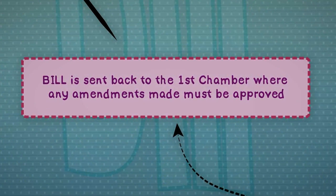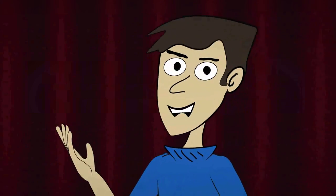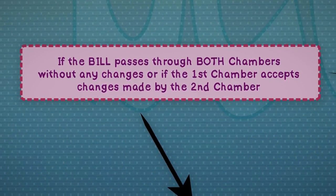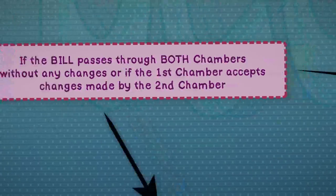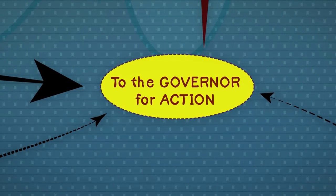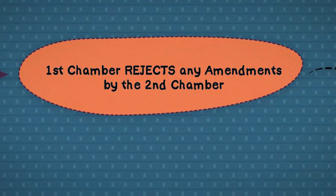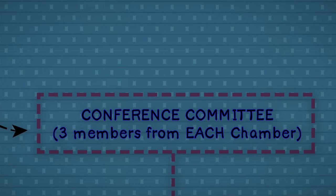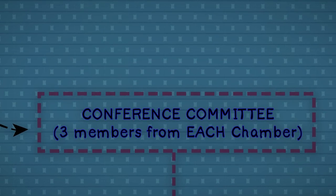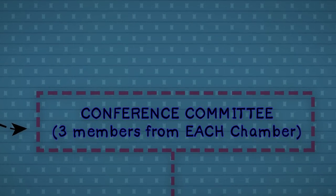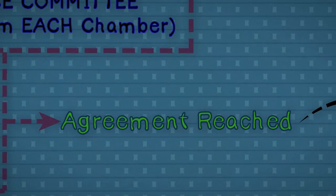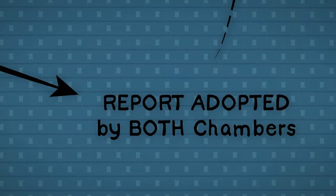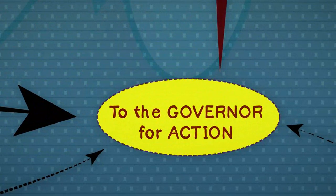Are you confused yet? If the bill passes through both chambers without any changes, or if the first chamber accepts the changes made by the second chamber, it is sent to the governor for action. If the first chamber rejects any amendments made by the second chamber, the sponsor can ask for a conference committee, which is made up of three members from each chamber. These individuals then try to iron out the differences between the two chambers and reach an agreement. If they can reach an agreement, a report containing the conference committee's suggestions is issued. If both chambers adopt the report, the bill is sent to the governor for his or her action.